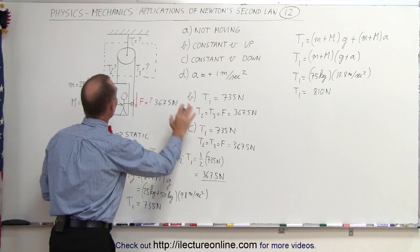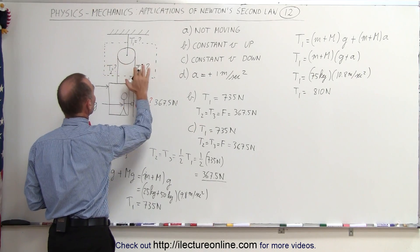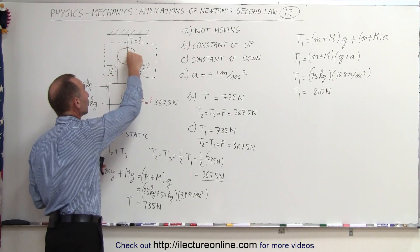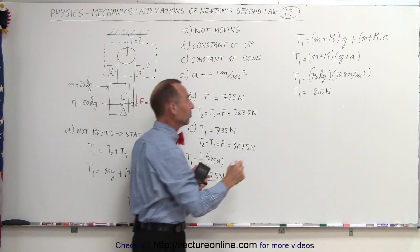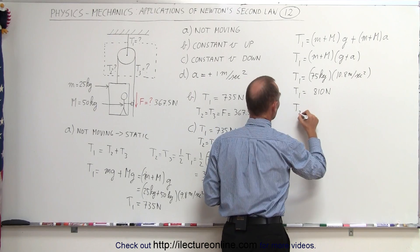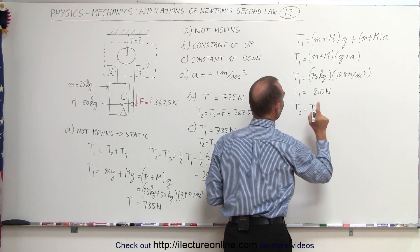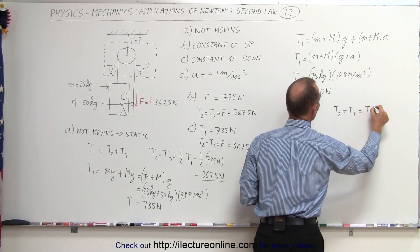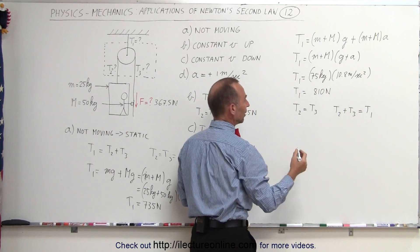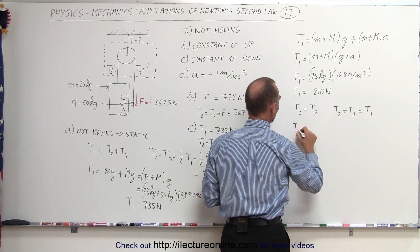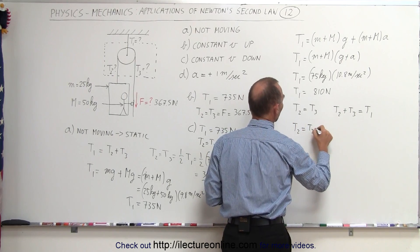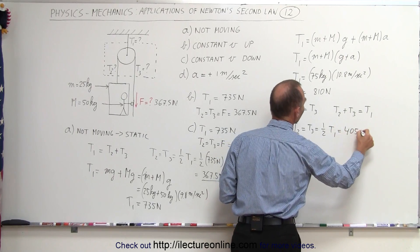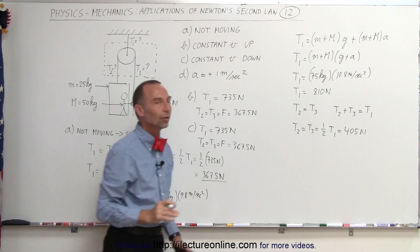Now that T1 = 810 newtons, what are T2 and T3? Since it's the same cable over the pulley, T2 must equal T3, and T2 + T3 = T1. Therefore T2 = T3 = ½ × T1 = ½ × 810 = 405 newtons. The force the person must apply is also 405 newtons.